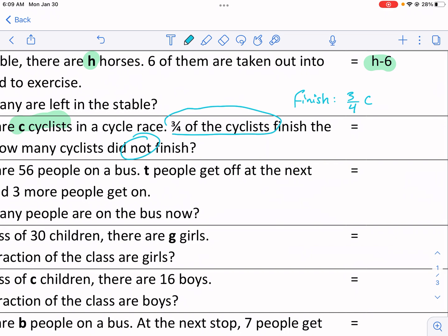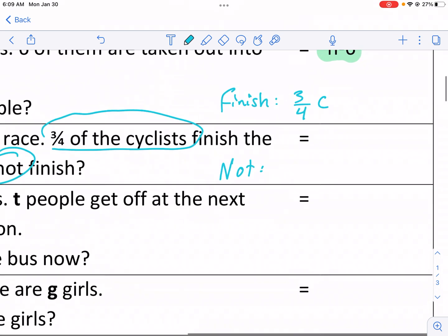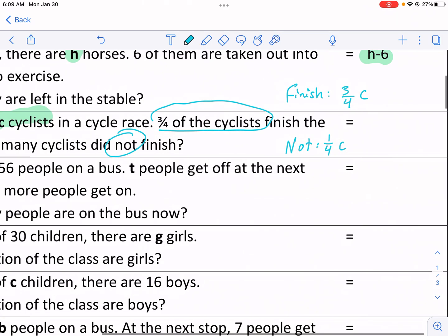So it would be did not finish, I'll just put not. Those that did not finish, it needs to add up to 100%, right? Or a total complete fraction. So what is the missing portion if 3 fourths finished? How many did not? It would be one fourth. But we still have to multiply it by C, the number of racers, which we don't know. We just know that there's a quarter that did not.